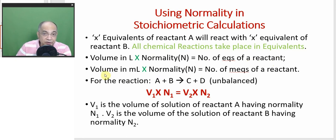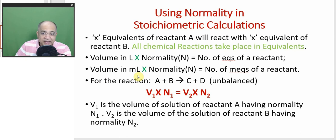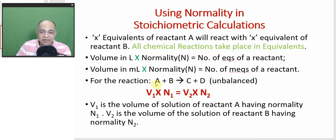That is the way of expressing concentration when we are interested in carrying out the titration experiment. The volume of a solution into its normality gives the number of equivalents of one reactant. If you use the millilitre concept instead, volume in millilitres into normality will give you the number of milliequivalents (MEQs) of the reactant. When the two reactants A and B completely react — that is the exact equivalence — the two equivalents should be equal.